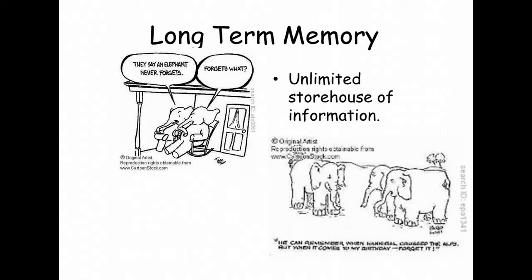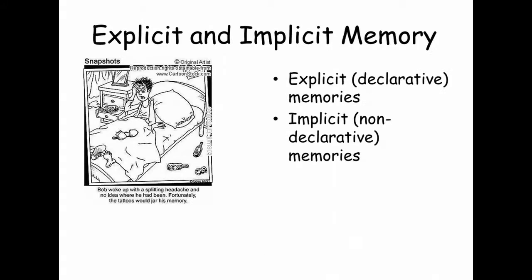Long-term memory is the relatively permanent and limitless storehouse of the memory system. Your long-term memory includes all of your knowledge, skills, and experiences throughout your life. There are recent studies that say you do not forget anything that is put in your long-term memory. For example, I know that even numbers end with the digits 2, 4, 6, and 8. Implicit memory is the retention independent of conscious recollection — in other words, I know how to pronounce and comprehend new vocabulary words.